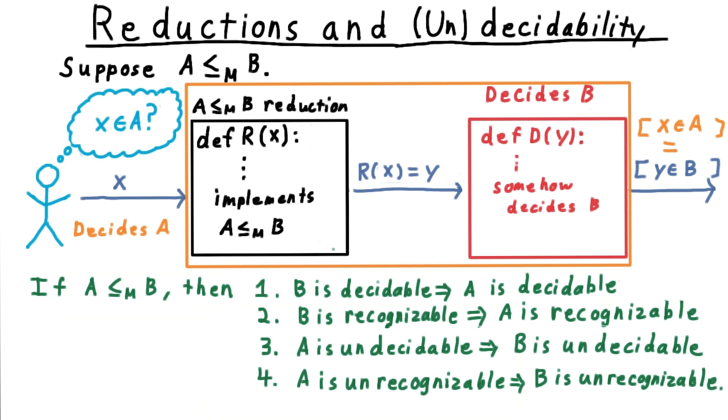If A is undecidable, then this composition of the reduction and the decider can't be a decider for A. Since we're assuming that there is a reduction, the only possibility is that the decider for B doesn't exist. Hence, B is undecidable. And the same logic holds for the unrecognizability of A and B.